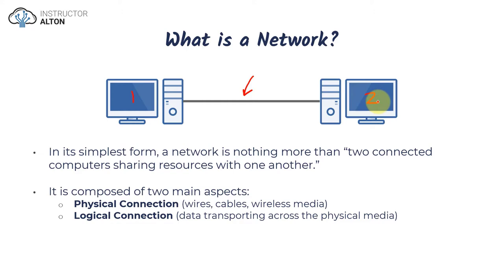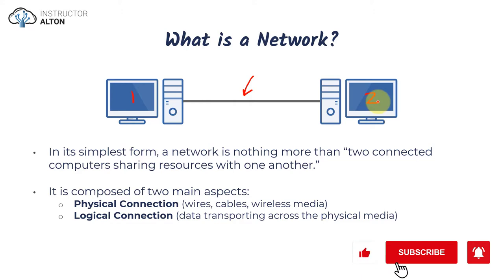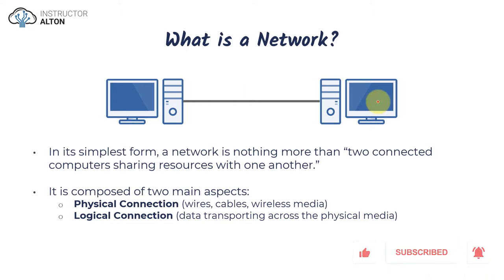We're simply connecting them together via a network cable. In terms of sharing resources, it can really be anything. To think about this in a very simple term, it could just be a text file. If PC1 on the left wanted to send that file to PC2 on the right, we simply connect them with the network cable and use protocols — which you'll learn about later in the course — to send this file across the wire from one system to another.